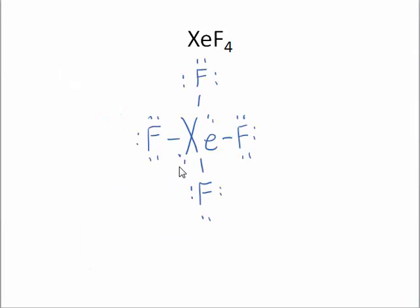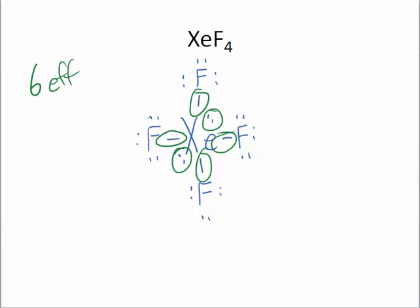In our last example, we're going to talk about xenon tetrafluoride. And you see here, from this, there's one, two, three, four, five, six effective pairs. And you see that there's two lone pairs.